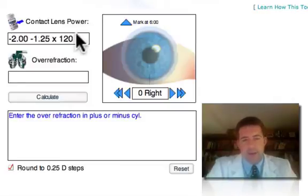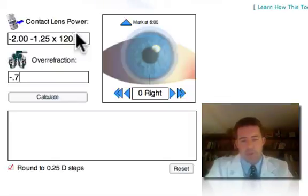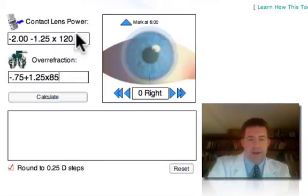And then tab down to the next box, an over-refraction that is typed in the same way. It can be plus or minus cylinder. Let's say we have an over-refraction of minus 0.75 plus 1.25, and axis, let's say, 085.